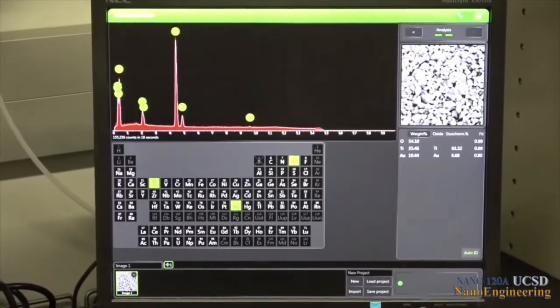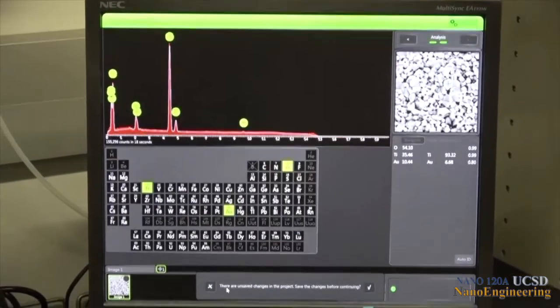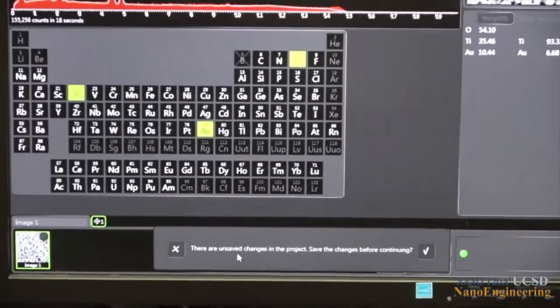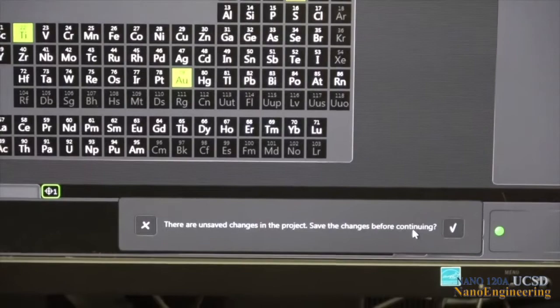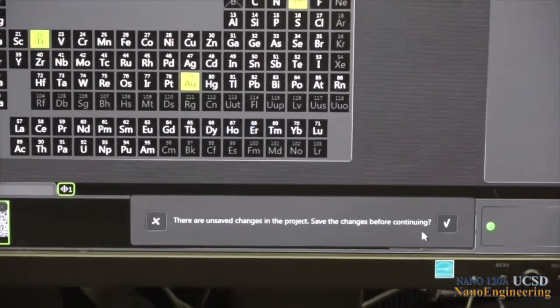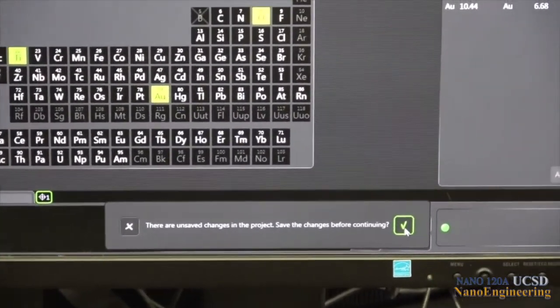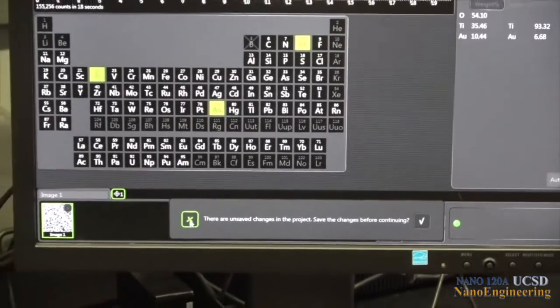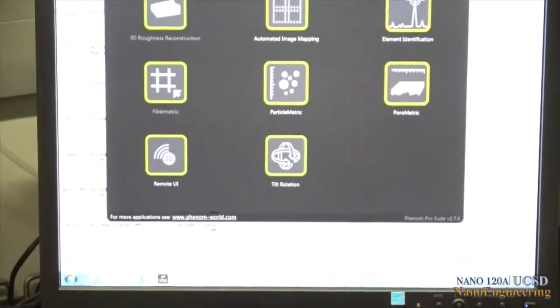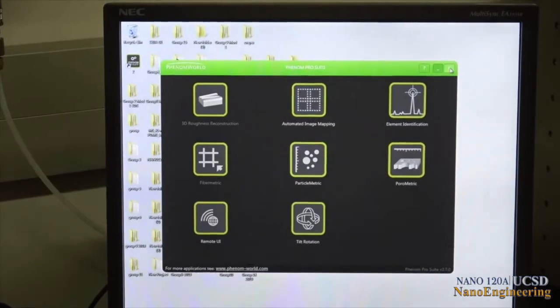To shut down the tool, move the arrow to the upper right corner of the screen and click. A message appears at the bottom that you have unsaved data. If you want to save the EDS data, click on the check mark that appears in this message. If not, click on the X as shown. This will take you to the Phenom ProSuite screen where you can exit out of that as well.